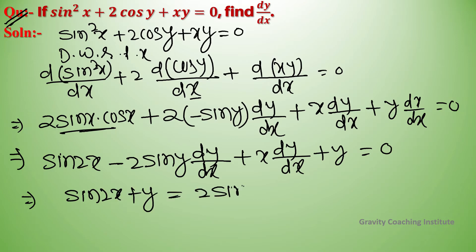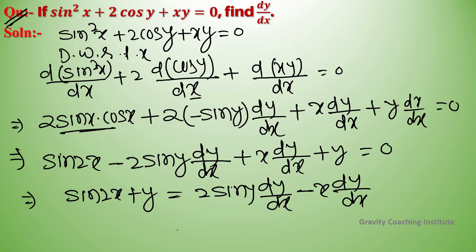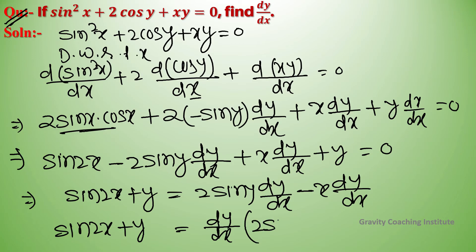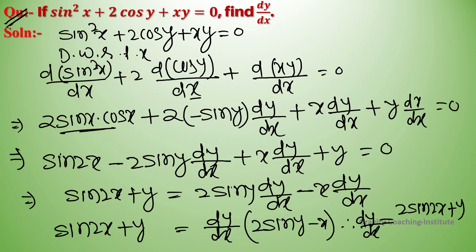Rearranging, we bring the dy/dx terms to one side: dy/dx · (2sin(y) − x) = −(sin(2x) + y). Wait, collecting terms: sin(2x) + y = 2sin(y) · dy/dx − x · dy/dx. Therefore, dy/dx = (sin(2x) + y) / (2sin(y) − x). Answer.